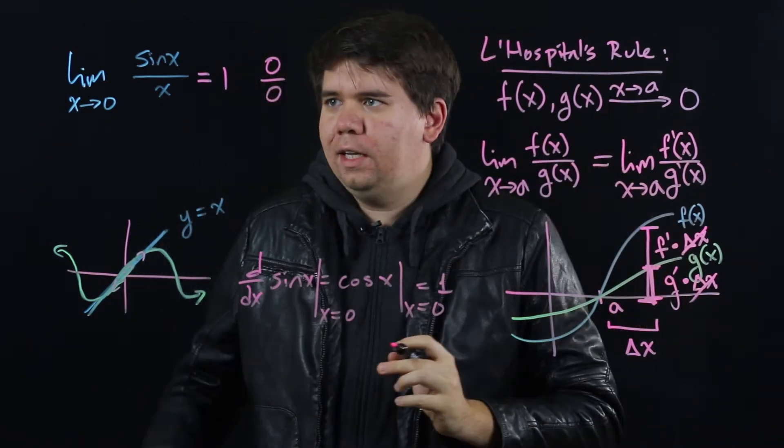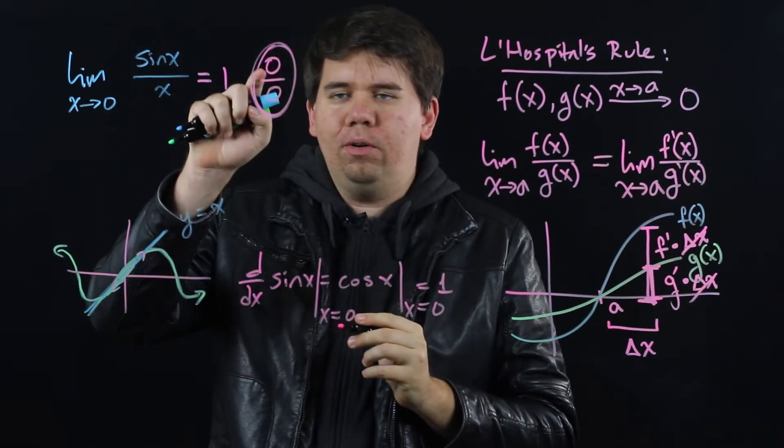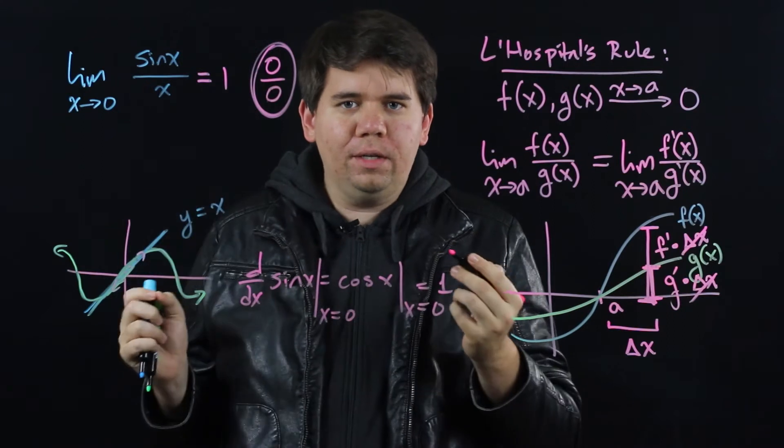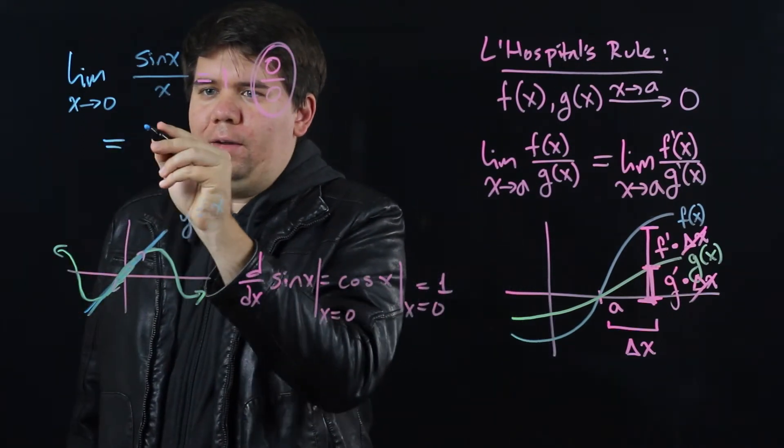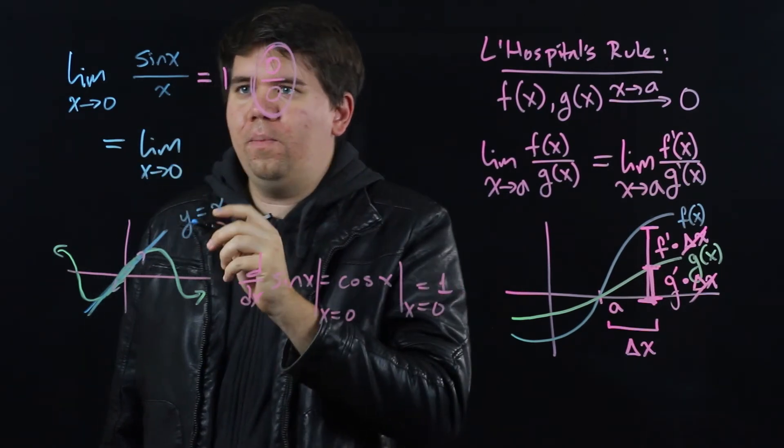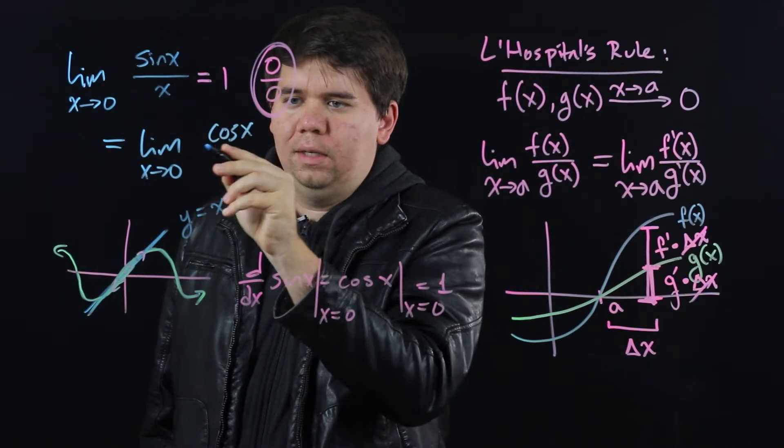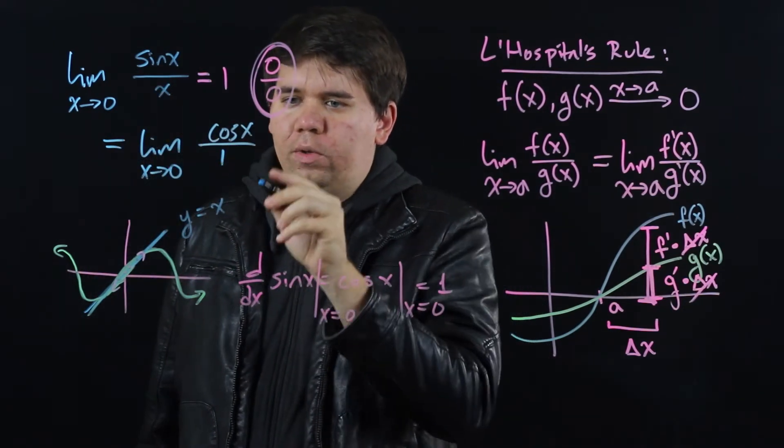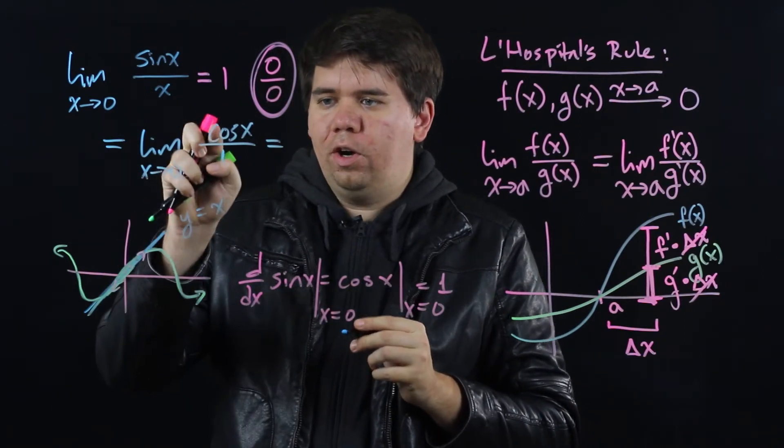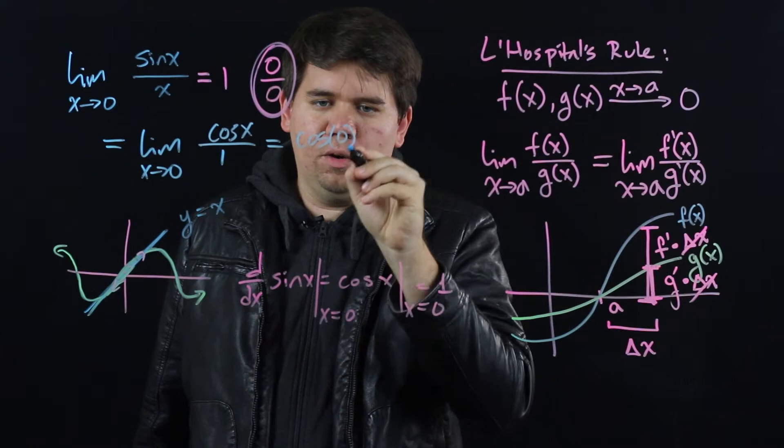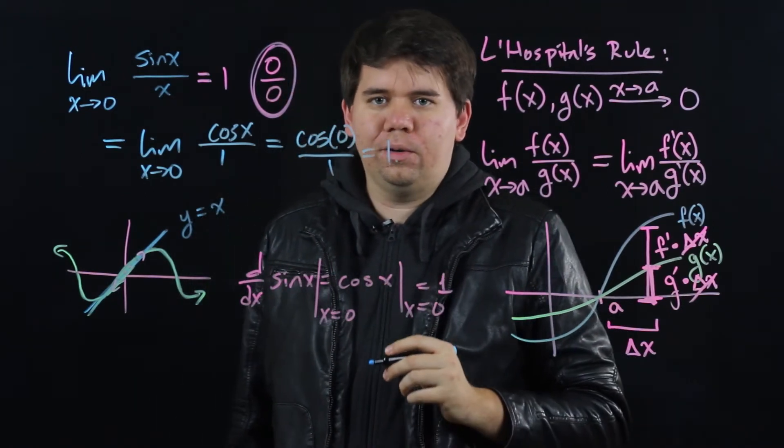All this is saying is if you want to calculate some limit like this and you find out that it's 0 over 0, what you can do is instead of calculating this limit, you calculate the limit as x goes to 0 of the derivative of the top, which would be just cos of x, divided by the derivative of the bottom, which is 1. Which then comes out to be, as x goes to 0, cos of 0 is 1, so you get 1 over 1, which is 1, just like we expected.